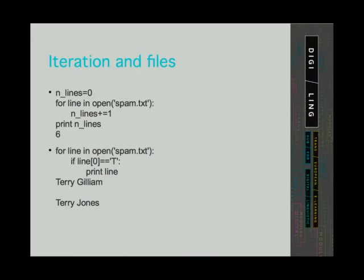In the second example, we use a condition in our for loop. We tell the program to check if the first character of the line is an uppercase letter T. If this condition is true, we tell the program to print the line. The program printed two lines starting with the name Terry, containing the uppercase letter T.